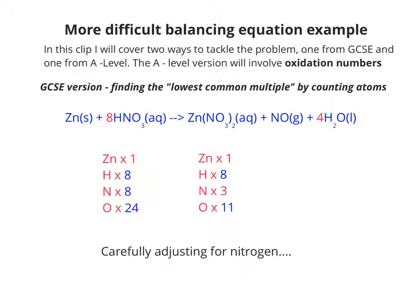So looking at the nitrogen now, we can see that we've got 8 on the left-hand side, but we only have 3 on the right-hand side. How can we deal with this? So by adjusting for nitrogen so that we have 8 on the right-hand side, we automatically solve for oxygen.